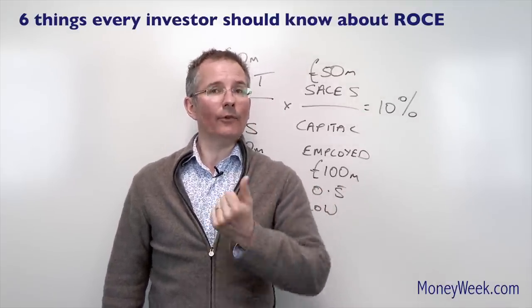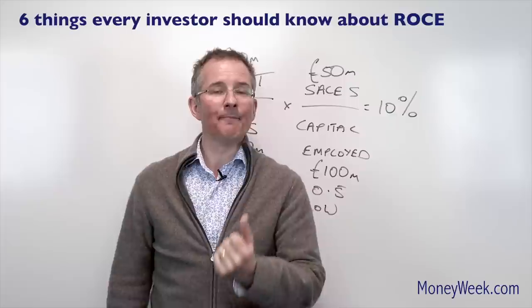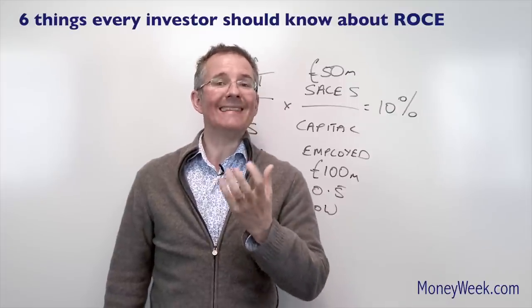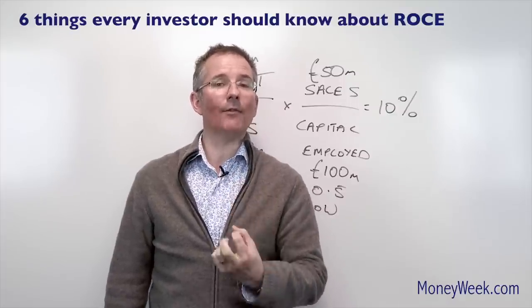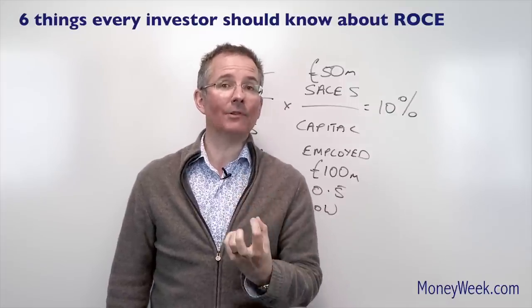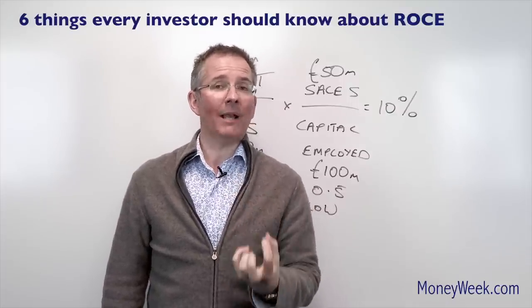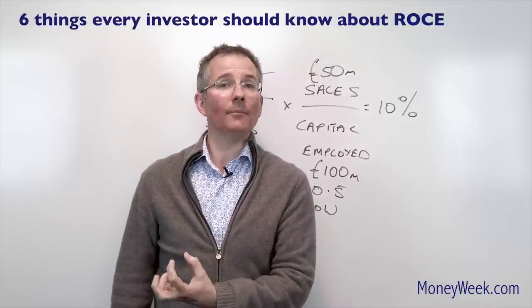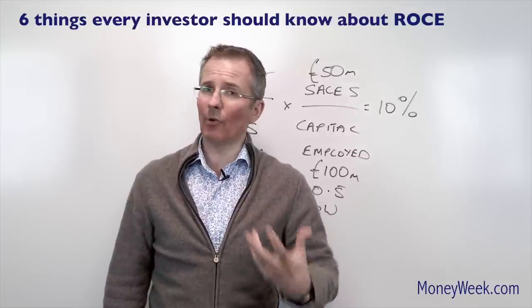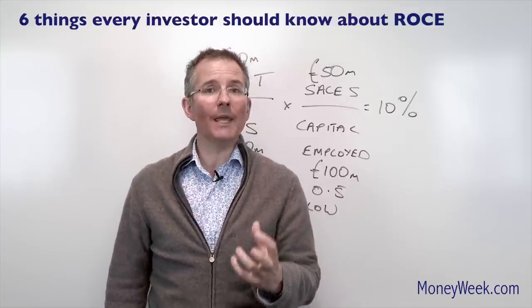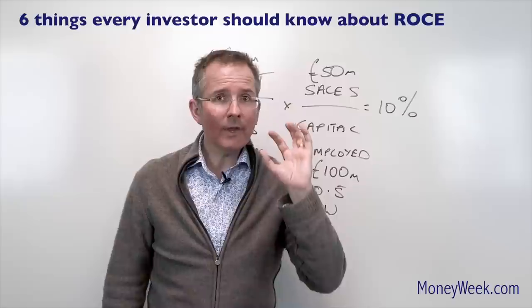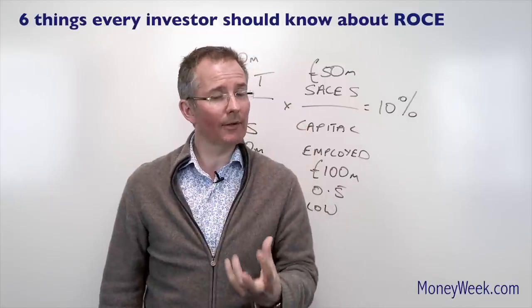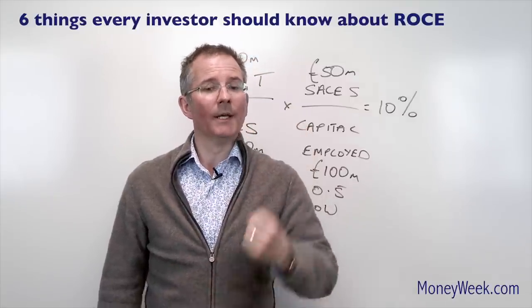Number one: it's out of date as soon as you look at it. Capital employed is typically taken from the latest balance sheet, and balance sheets are typically slightly out of date — they're published and audited, but the information won't be right up to the moment. So that's just something to bear in mind.